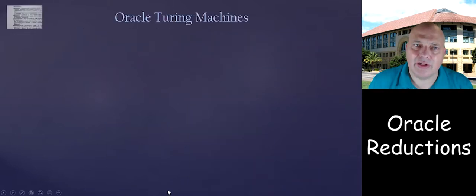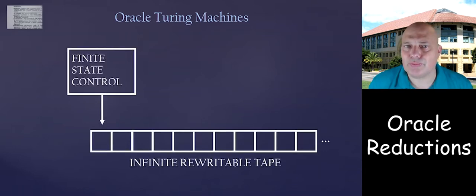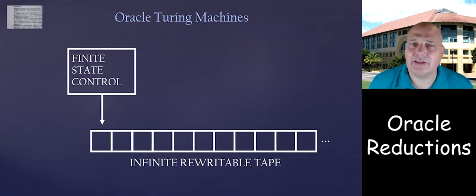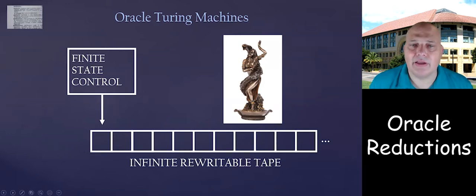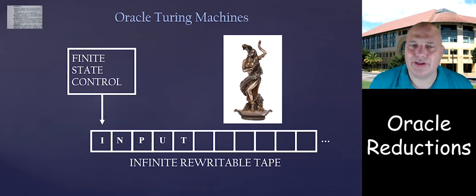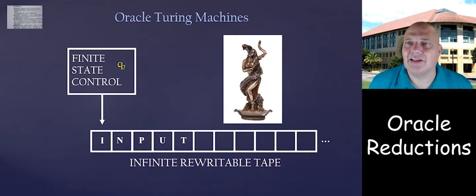To define oracle reductions, let's discuss oracle Turing machines. A standard Turing machine has a finite state control and an infinite read-write tape. For an oracle Turing machine, we give it additional power: access to a function we refer to as an oracle. Formally, to ask a query from the oracle, you write it on your tape, move to a special state which asks the query, and then in one step you get an answer — regardless of what the function is.